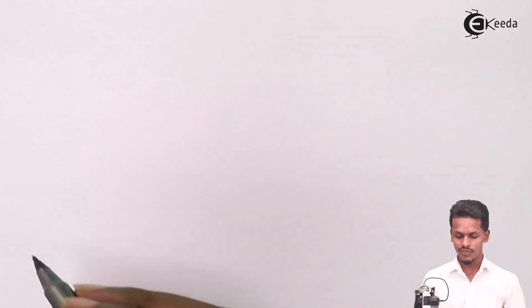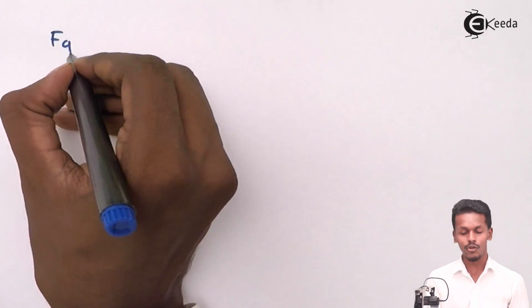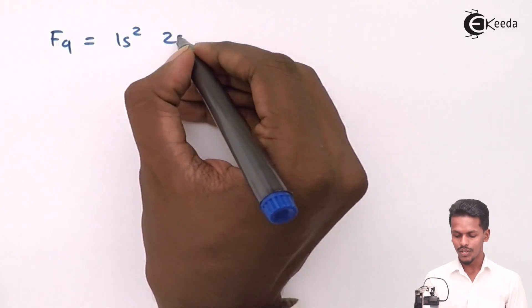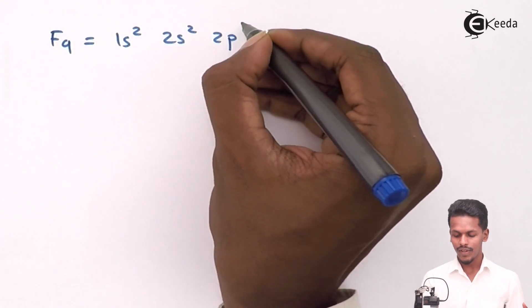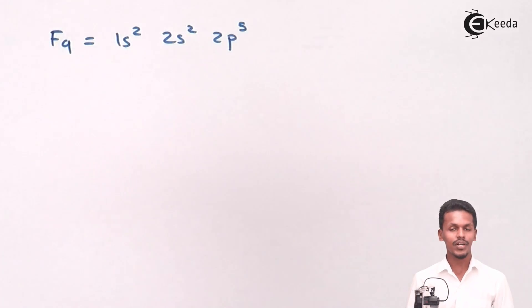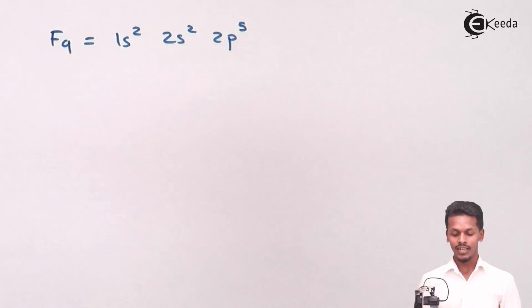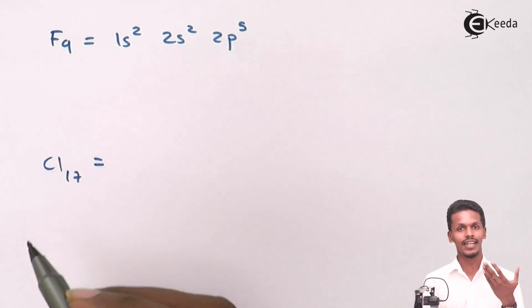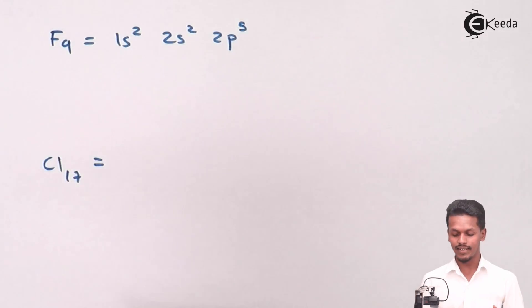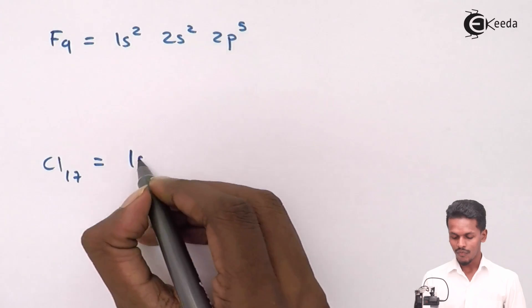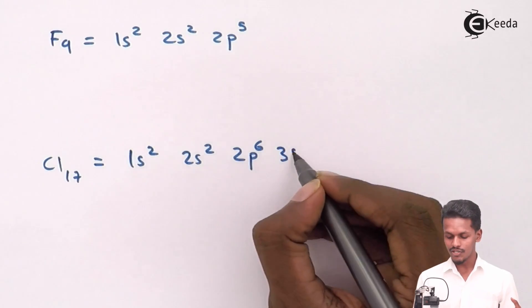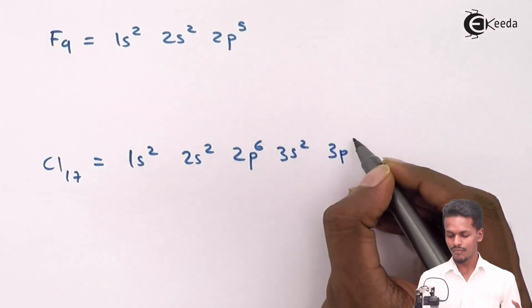Talking about fluorine, it can be represented in electronic configuration as 1s2, 2s2, 2p5. That is what fluorine looks like. But chlorine, with atomic number 17, can be represented as 1s2, 2s2, 2p6, 3s2, and 3p5.